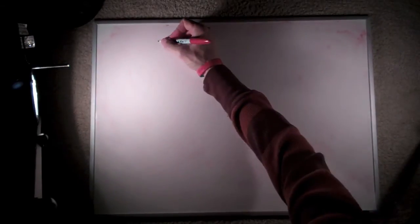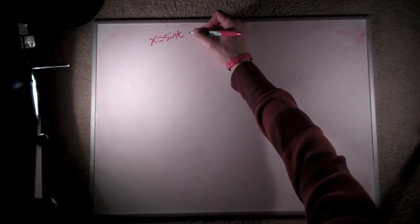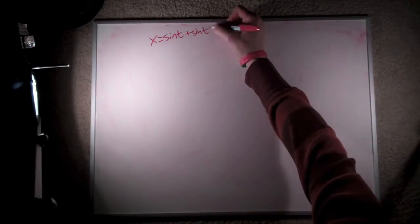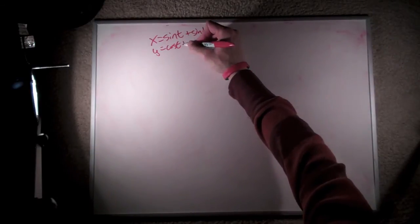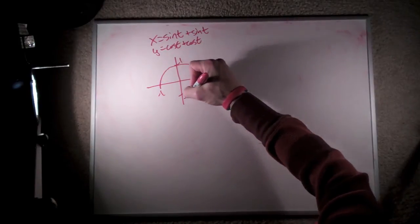Just as a basis of comparison, let's go ahead and give ourselves our good old extension graph one more time. x = sin(t) + sin(t), y = cos(t) + cos(t), just so we've got a basis of comparison for everything, right? Cool.